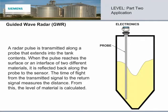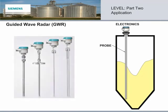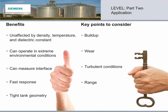Guided wave radar transmits a radar pulse along a probe. The pulse reflects back to the sensor when it reaches the material surface, or an interface of two different materials. The time of flight from the transmitted signal to the return signal measures the distance, and the level is calculated. Guided wave radar is sometimes referred to as time domain reflectometry, or TDR. It is not affected by density, temperature, and dielectric constant. It operates in extreme conditions, measures interface, is very responsive, and overcomes complex tank geometry.